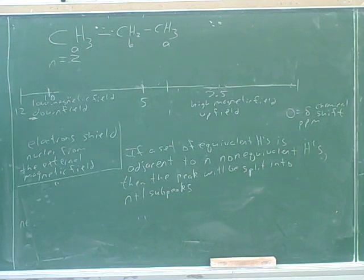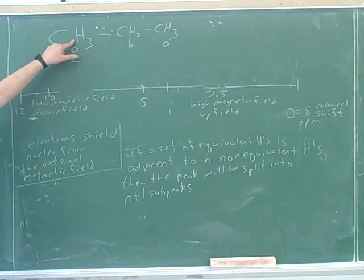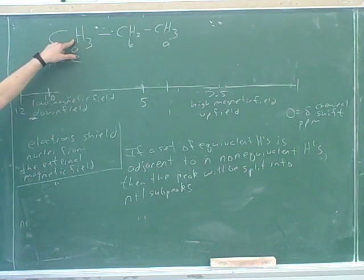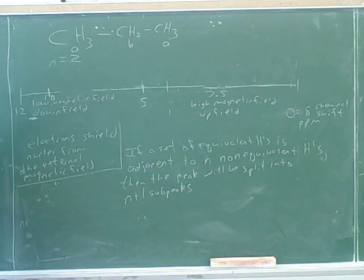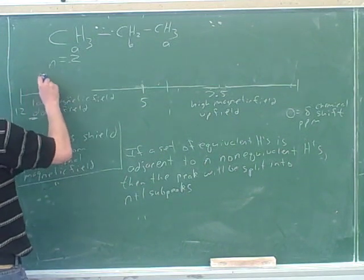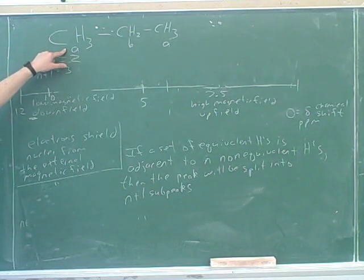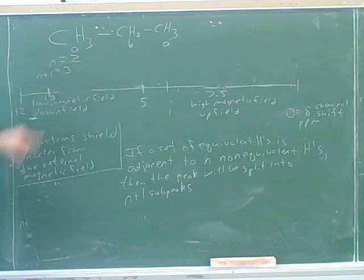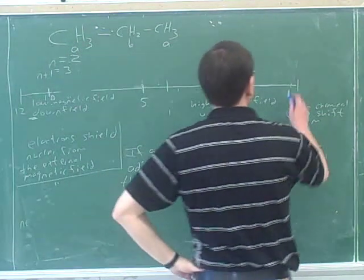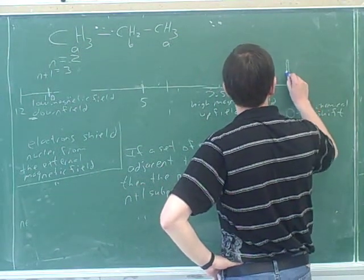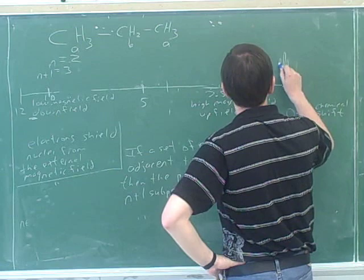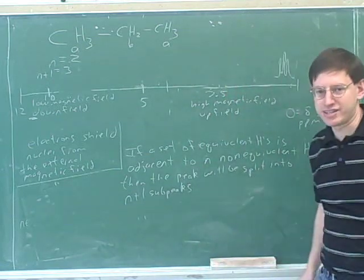You only count the adjacent non-equivalent hydrogens. After all, each of these hydrogens is also on the same carbon as two other hydrogens, but those are all equivalent to each other. You're only going to be split by the non-equivalent hydrogens. So n plus 1 would be 3, and that means that peak A is going to be split into three subpeaks.